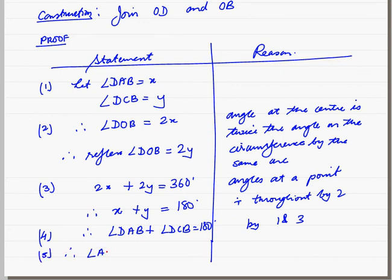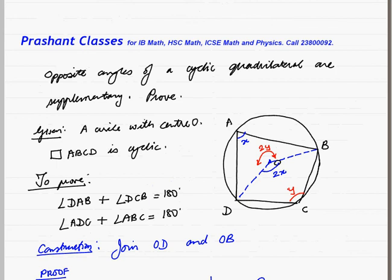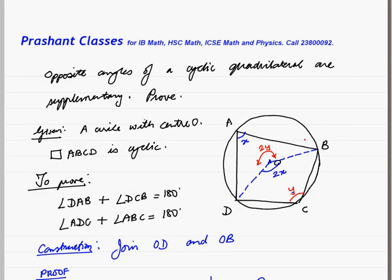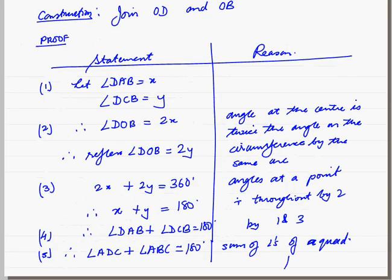Statement 5: Therefore, angle ADC plus angle ABC will also be 180. Because in a quadrilateral, sum of angles is 360. So if two angles add to 180, then the other two angles will obviously add to 180. Hence proved.